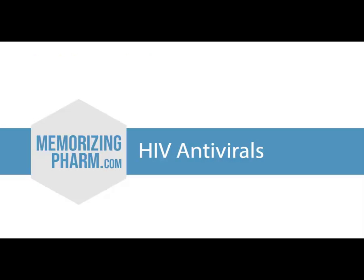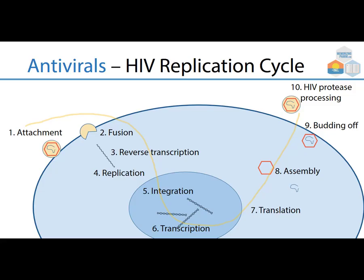For HIV antivirals, we really want to look at how the replication cycle happens so we know where the drugs work. The HIV replication cycle involves: attachment, fusion, reverse transcription, replication, integration, transcription, translation, assembly, then budding off, and HIV protease processing.